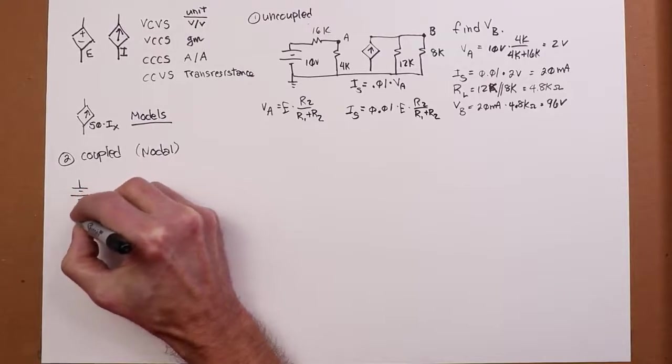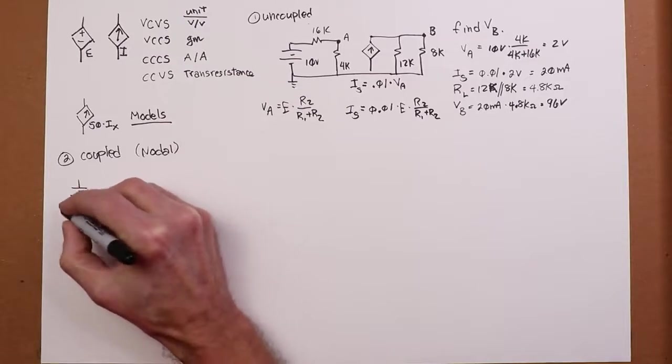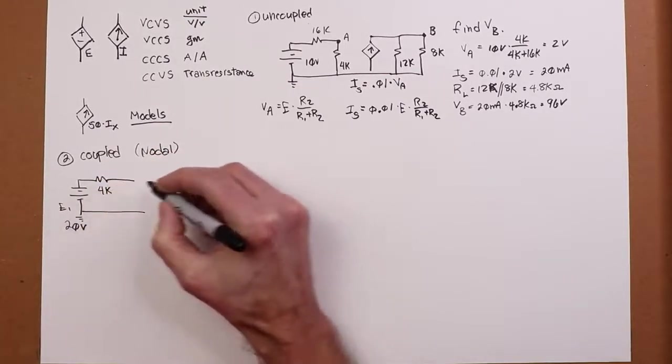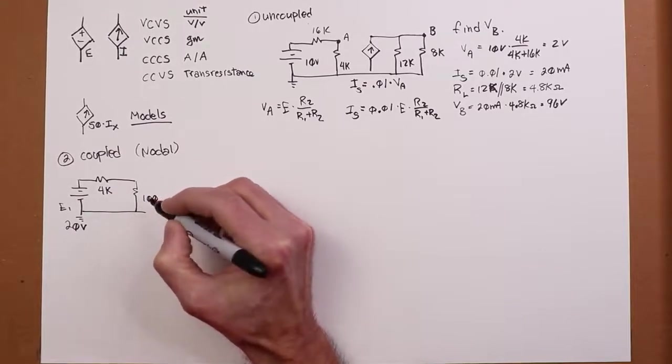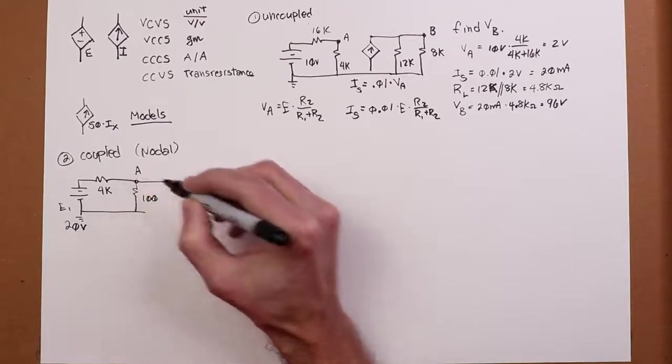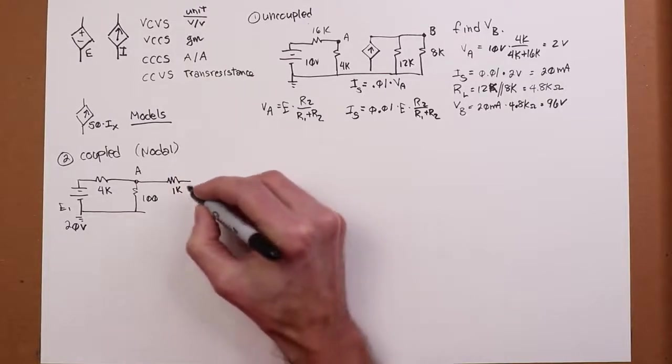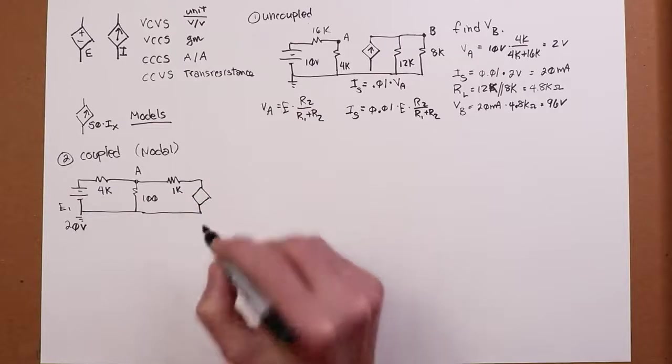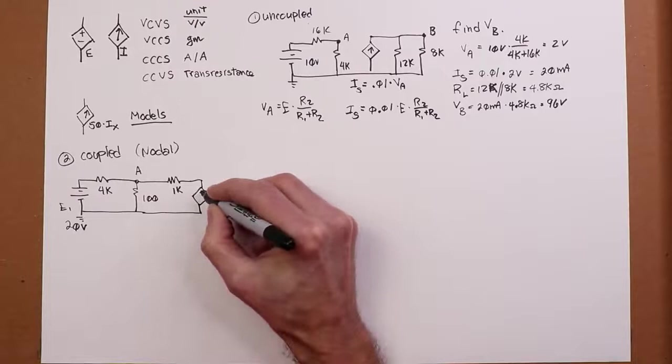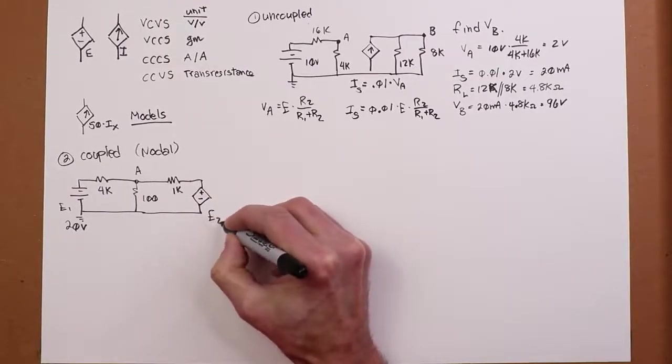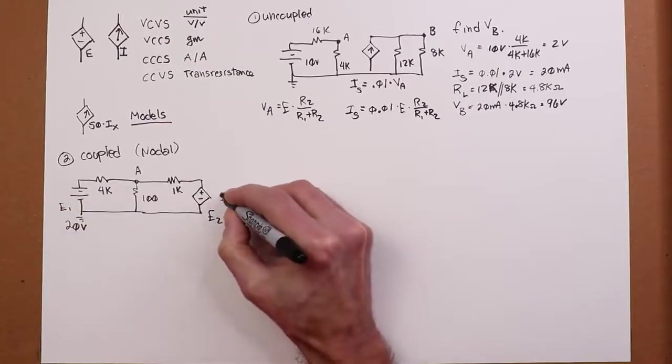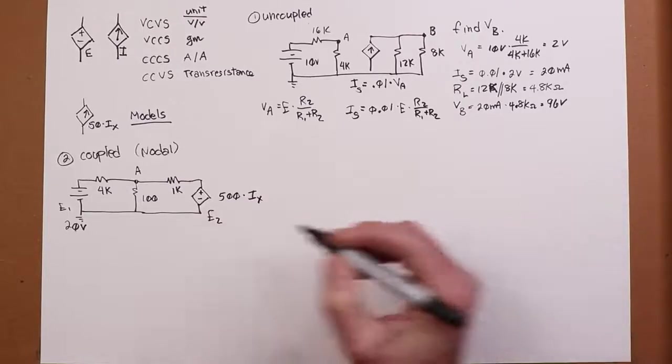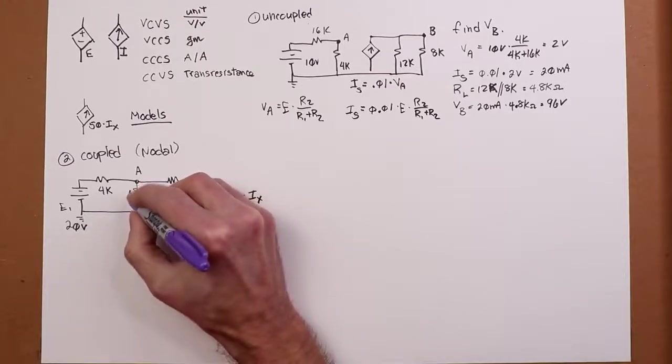You can use other techniques, but I think Nodal works really well. So, let's put one in here. So, I've got my E1 source over here. Let's say that's 20 volts. I'm going to put up maybe a 4K resistor over here. And a 100 ohm resistor over here. Let's call that point A. Put a 1K there. And here comes our controlled source. I'm going to make this a current controlled voltage source, the exact opposite of what we had over here. So, this is a voltage source. And we'll call it E2 to distinguish. The value of this is 500. That would be the transresistance times Ix.